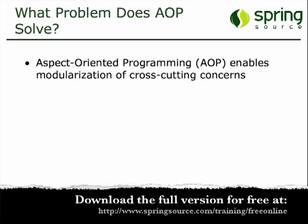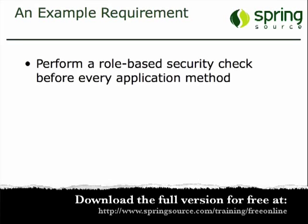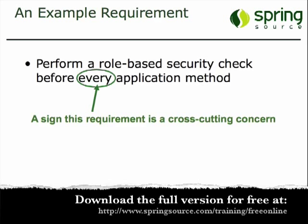A cross-cutting concern is a piece of functionality that's needed in potentially lots of places in your application. Things like logging and security, transaction management — those are examples of cross-cutting concerns. Those are things that show up in a lot of places in your application. Consider a requirement like: you need to perform a role-based security check before every application method. The word 'every' there is your indicator that this is probably a cross-cutting concern, something that you should modularize.